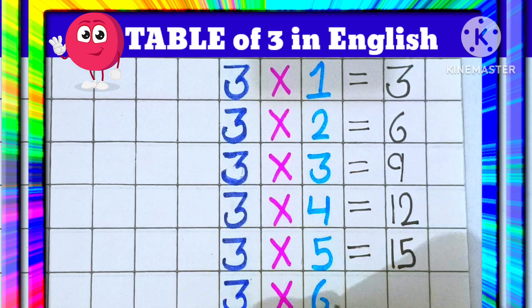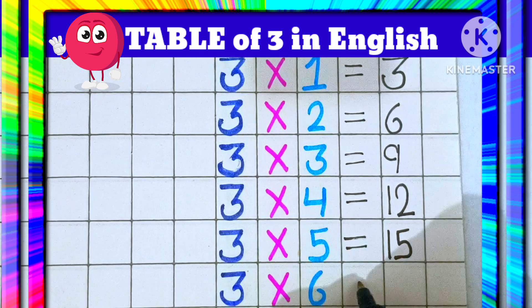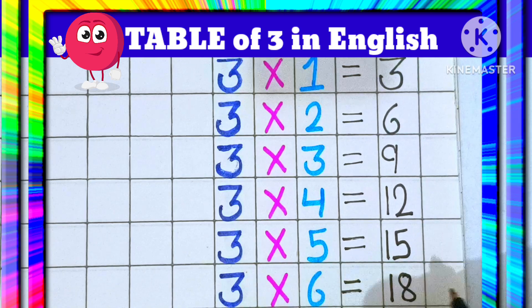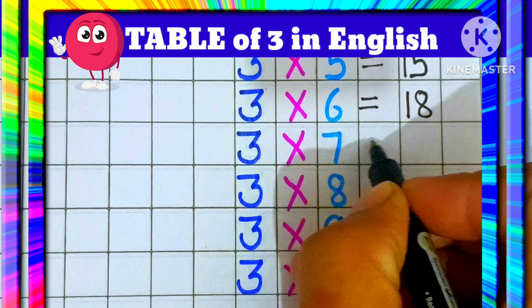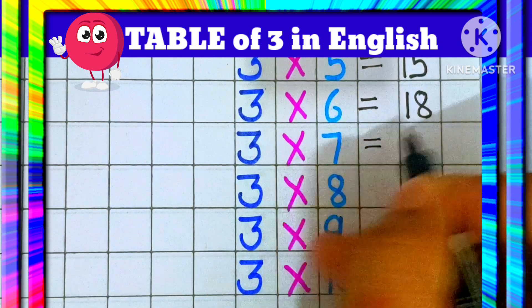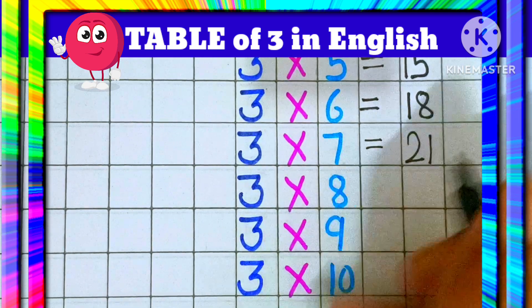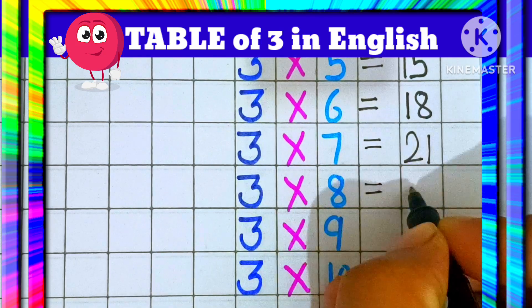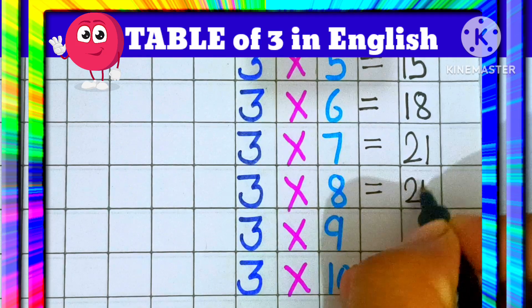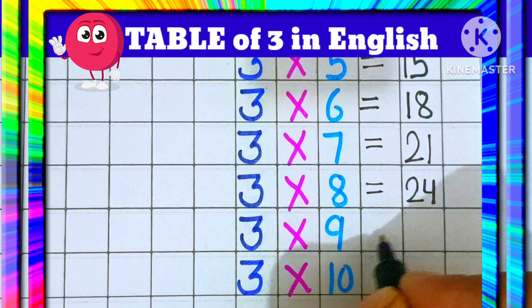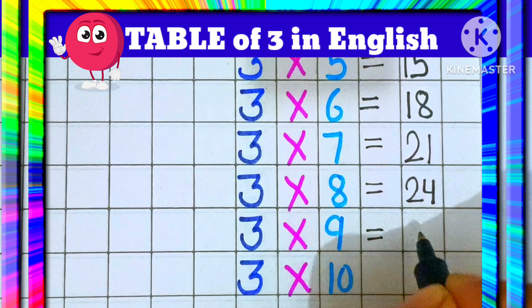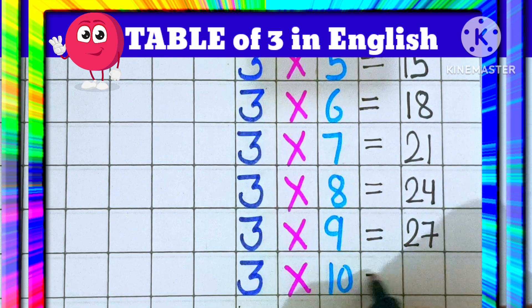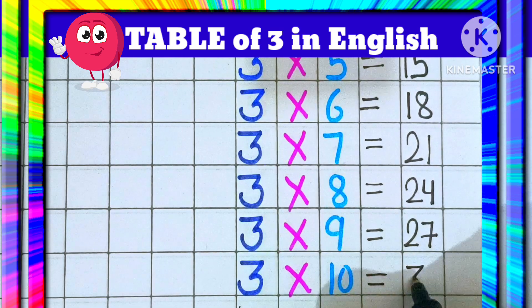3 6's are 18. 3 7's are 21. 3 8's are 24. 3 9's are 27. 3 10's are 30.